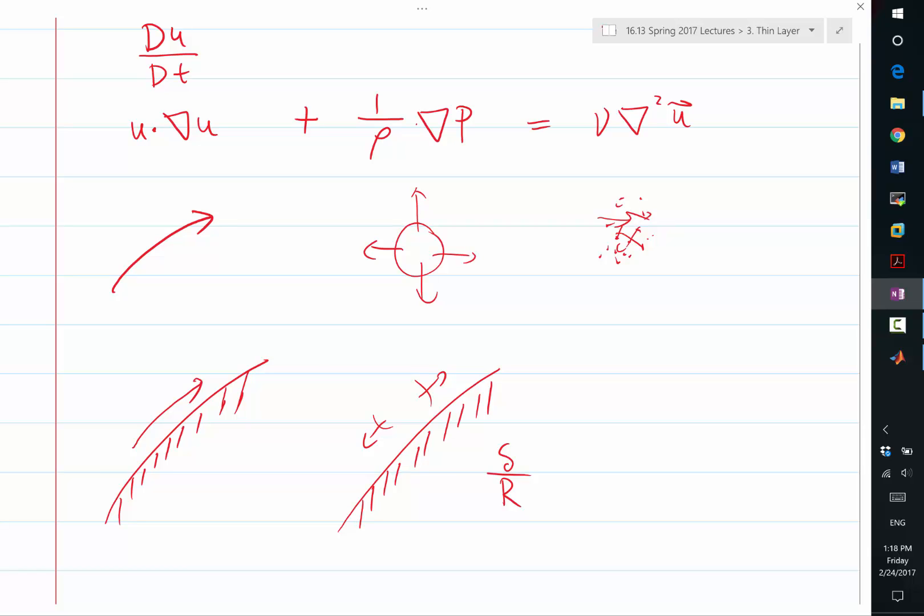What I mean is the contribution of the normal pressure gradient to the streamwise momentum balance equation is going to be on the order of delta over R.